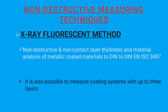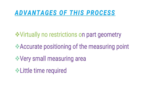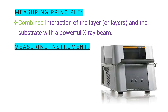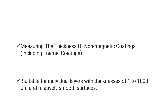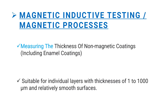Advantages of the X-ray fluorescent process: virtually no restrictions on part geometry, accurate positioning of the measuring point, very small measuring area, and little time required. The measuring principle is the combined interaction of the layer or layers and the substrate with a powerful X-ray beam. The measuring instrument used is the Fischer scope X-ray system.